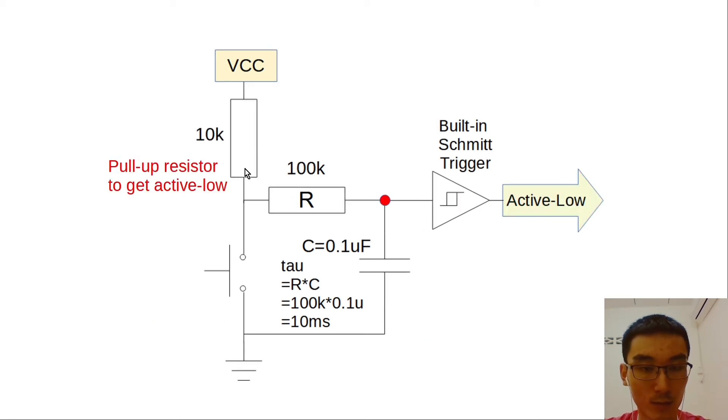To obtain an active low signal, the circuit can be reused except that the position of the resistor and push button will be interchanged.